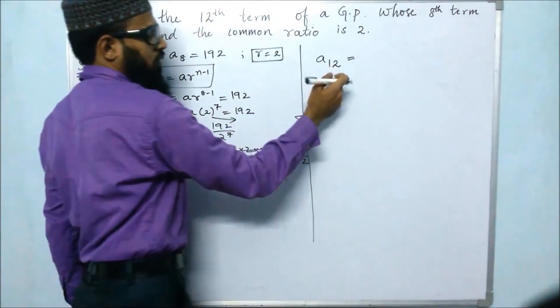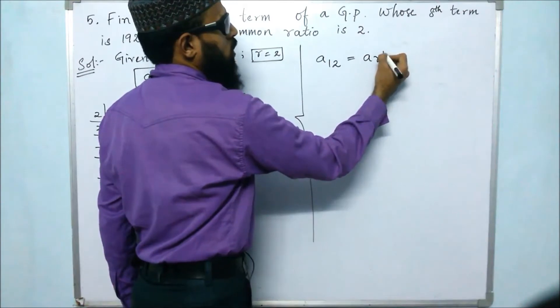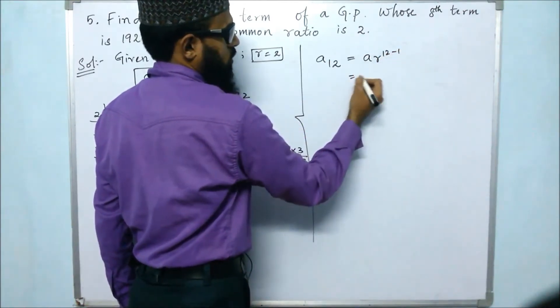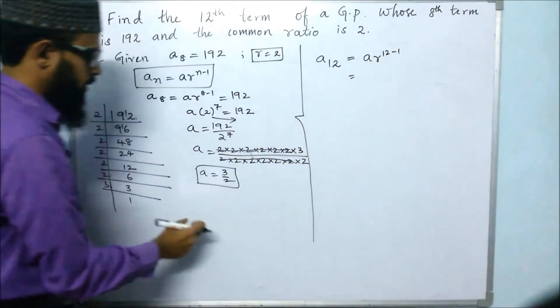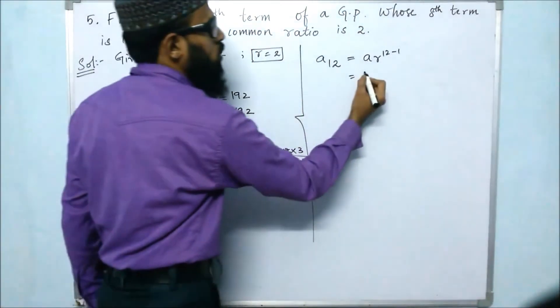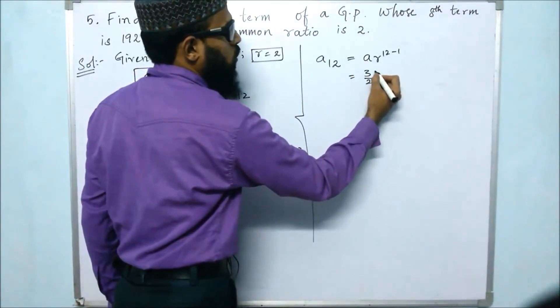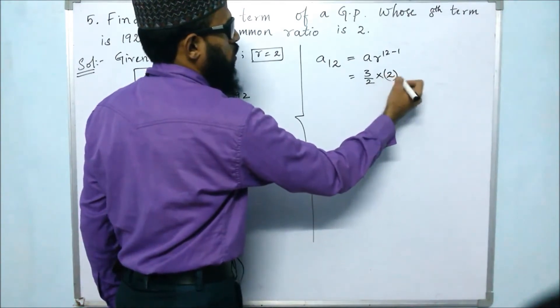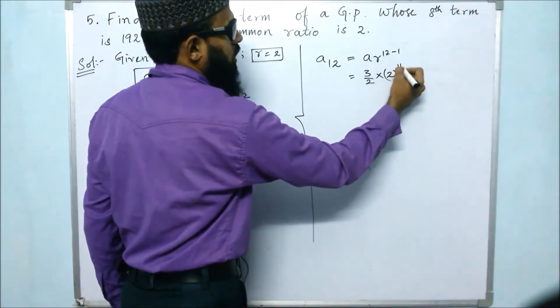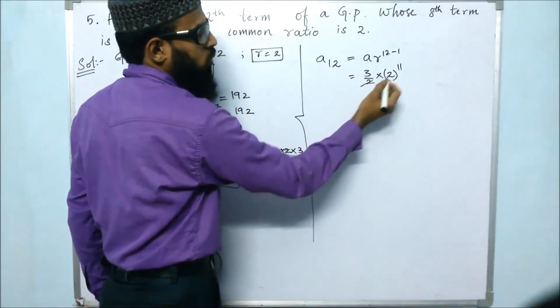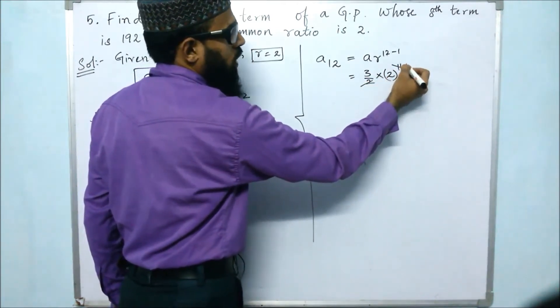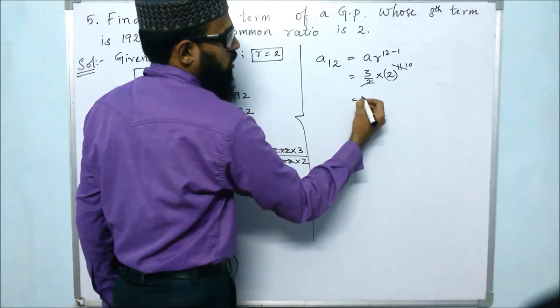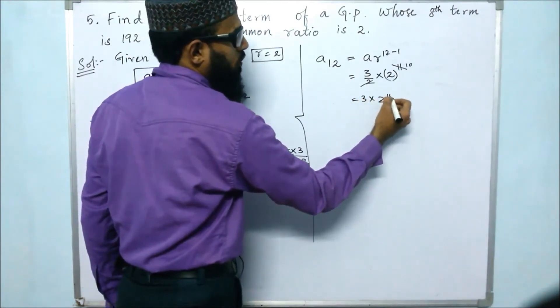So for a12, we will get a times r to the power of 12 minus 1. What is a? a is 3 by 2. So 3 by 2 times what is r? r is 2. 2 to the power of 12 minus 1, that is 11. So if we cancel one 2 from 11, we will get 10. So 3 times 2 to the power of 10.